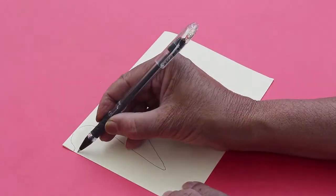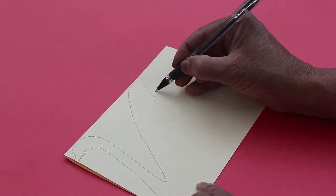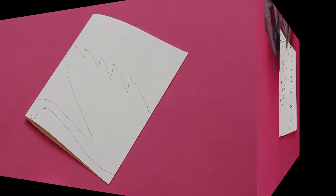First draw the neck and the beak and then the body with the feathers.